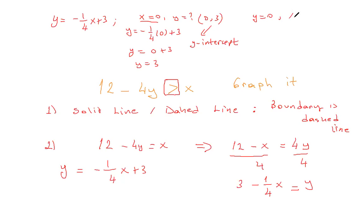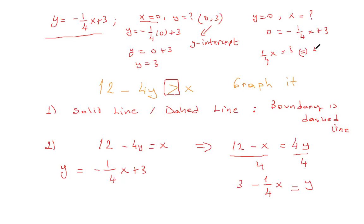To find the x-intercept, when y is 0, what is x? In the function: 0 equals negative one-quarter x plus 3. Multiplying both sides by 4, or first moving the negative term — positive one-quarter x equals 3, then 4 times one-quarter x equals 4 times 3, giving x equals 12. So x is 12 when y is 0 — we call this the x-intercept.